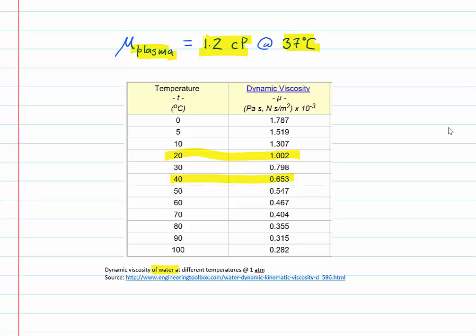So you can see that the dynamic viscosity of plasma is greater than that of water, pure water. That is because the plasma contains many proteins and ions. So although the plasma is 90% water, its dynamic viscosity is different than pure water, but it is still a Newtonian fluid.